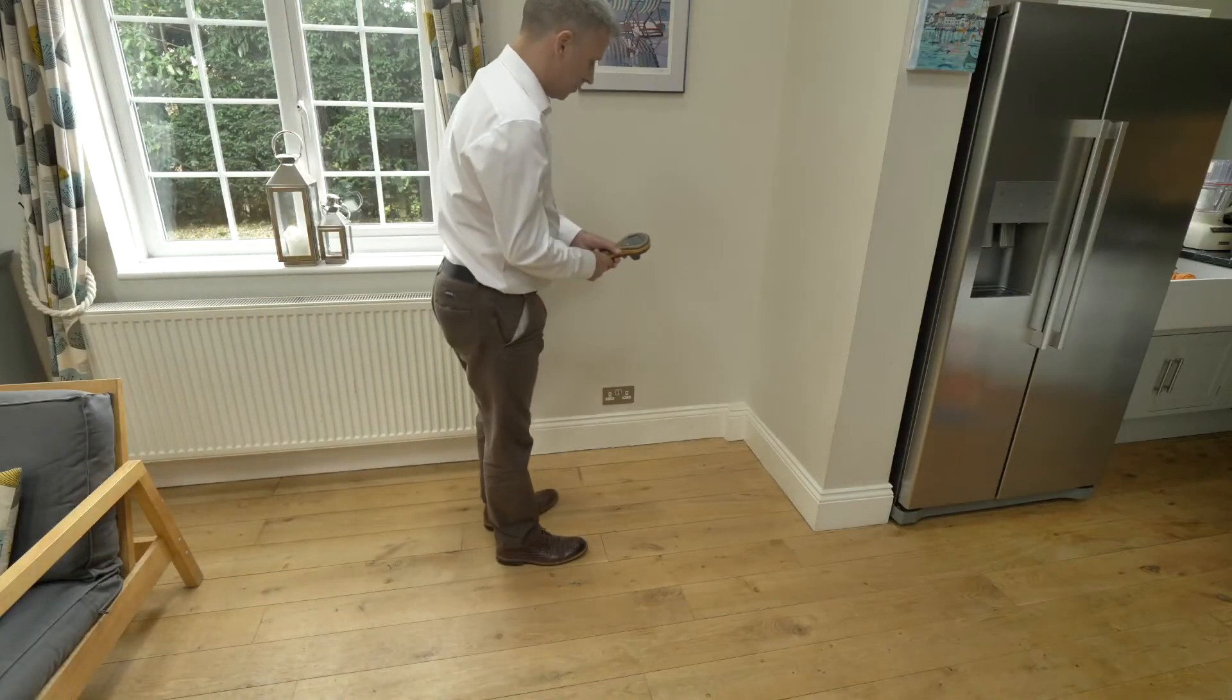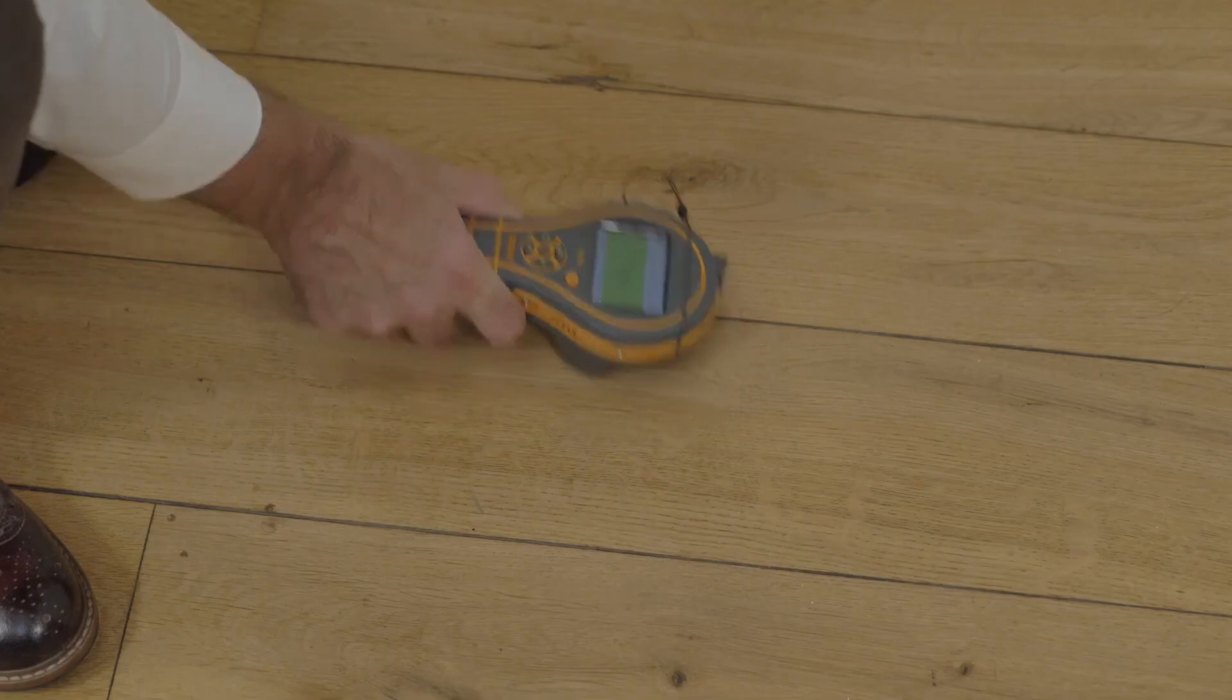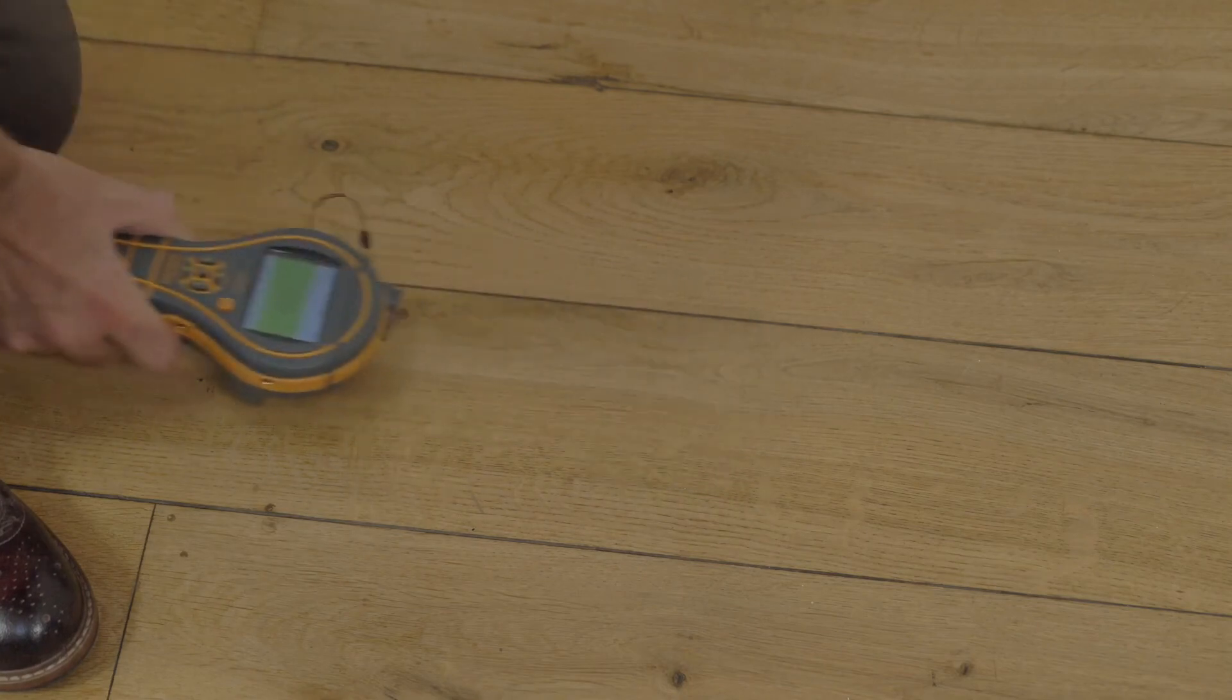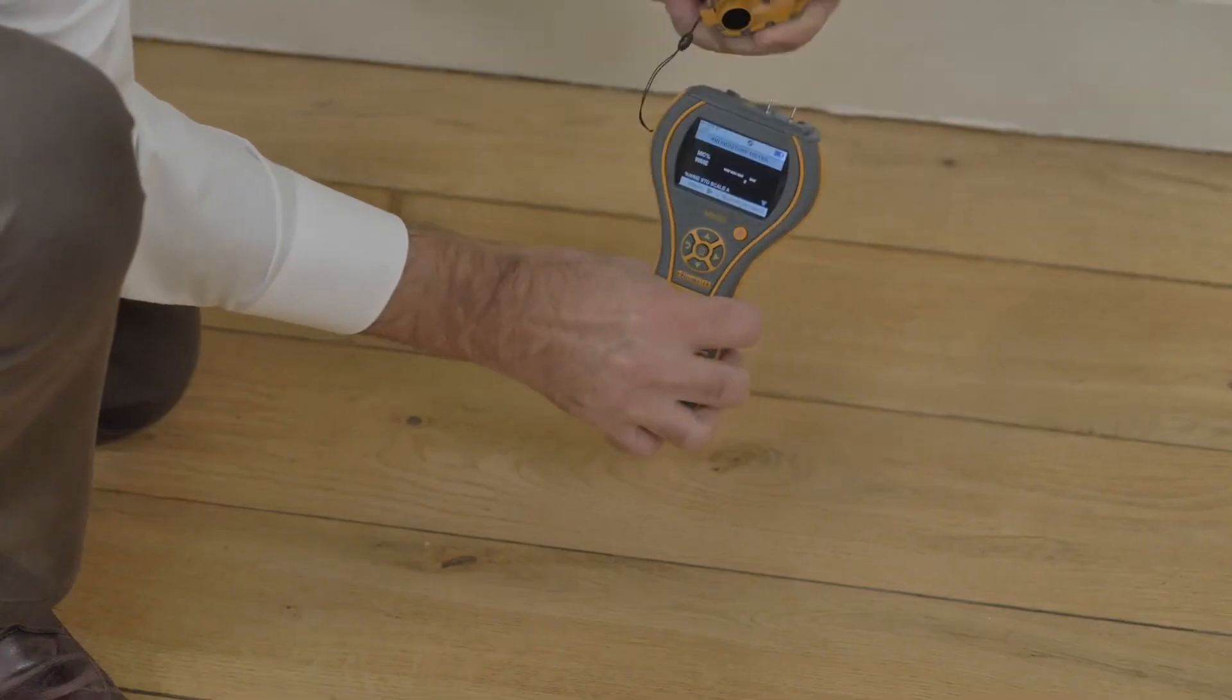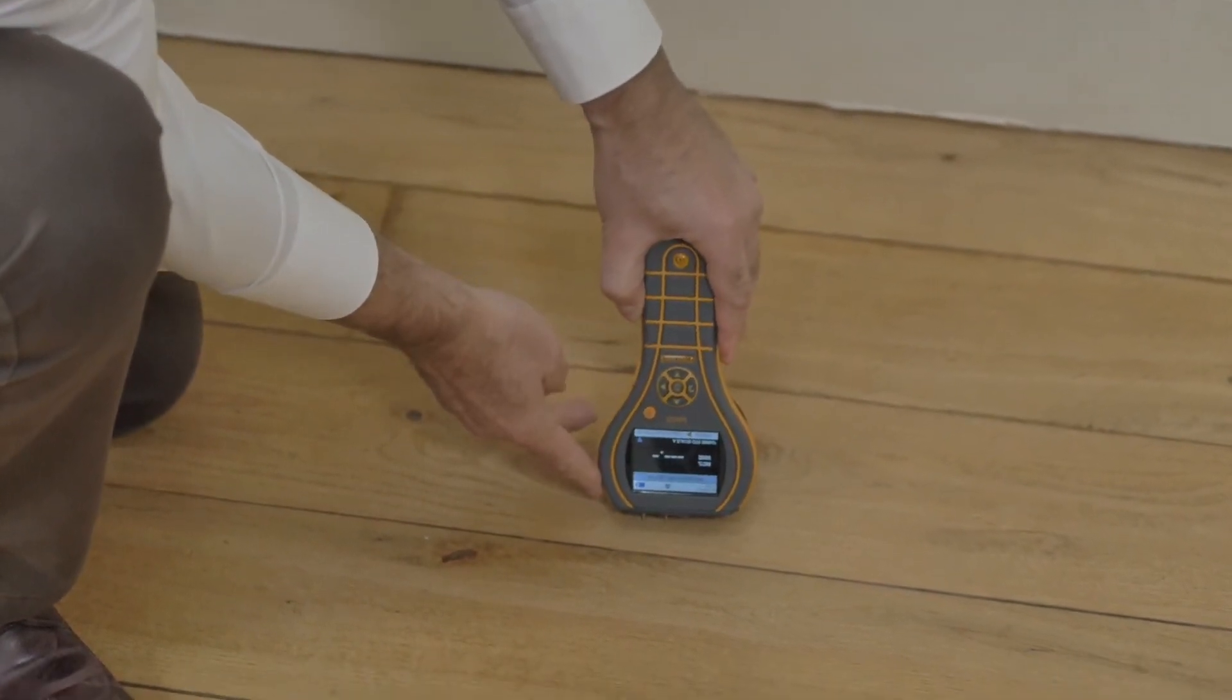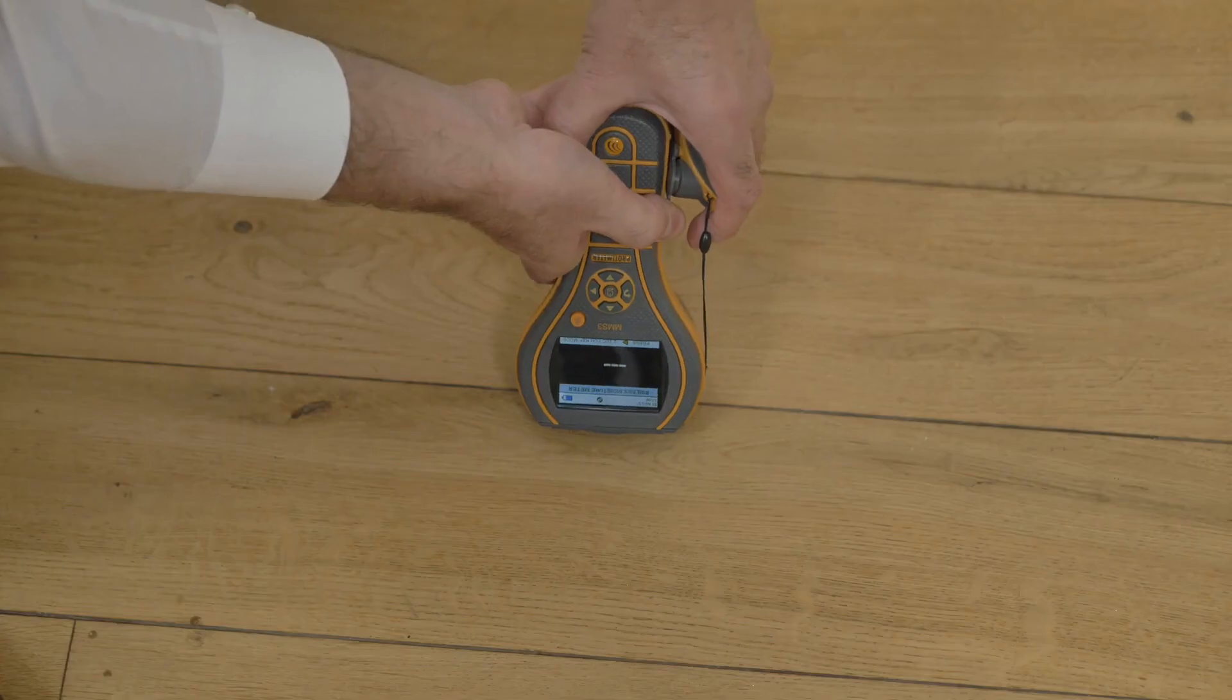Now we're going to look at the MMS3 in a wood floor situation. You can use the non-invasive to quickly assess areas of potential moisture. And then we can also use the pins in the surface of the material to see whether there's any moisture there. In this case, we can see no excessive moisture is present.